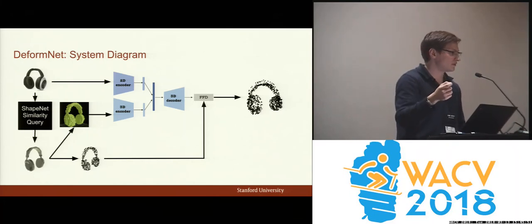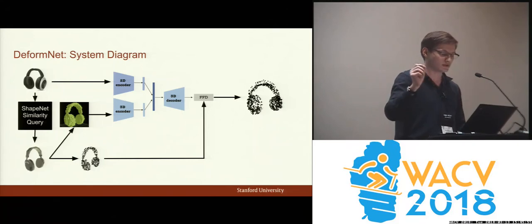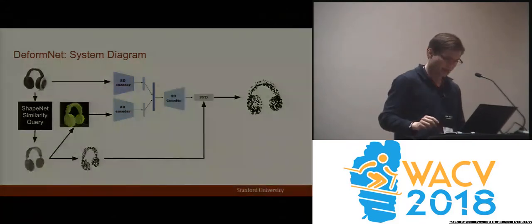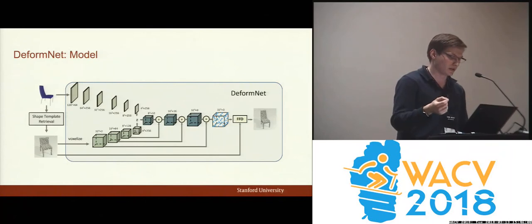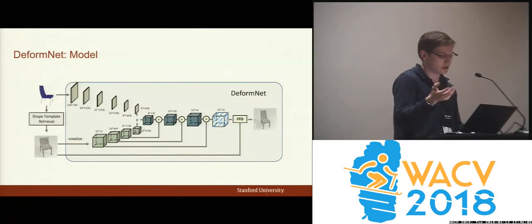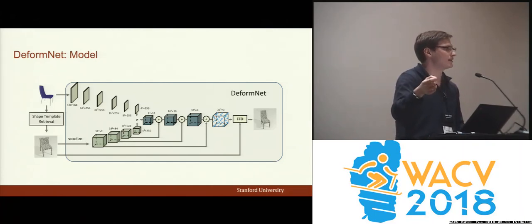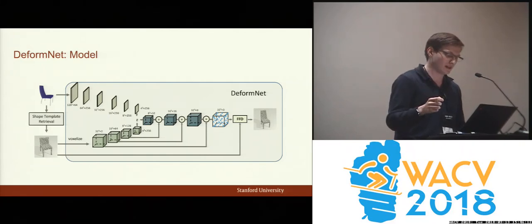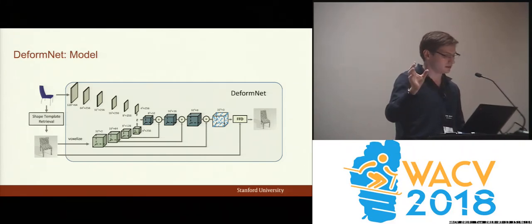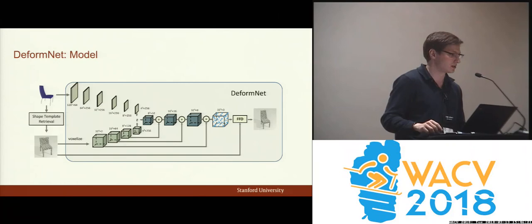We then deform the template object using its point cloud representation to produce a final reconstruction. Here in more detail is the actual model of DeformNet: essentially two encoders, one 2D encoder and one 3D encoder. We combine them and input the combined encoding into a 3D decoder. We also use skip connections between the 3D encoder and the 3D decoder to simplify learning.